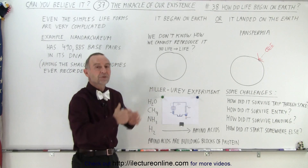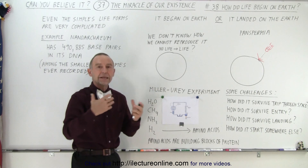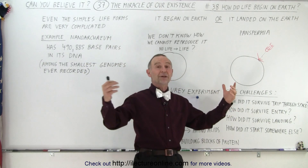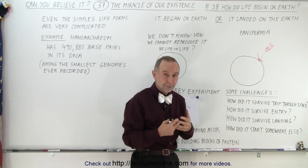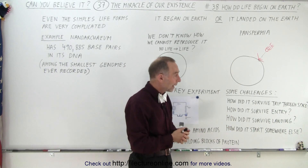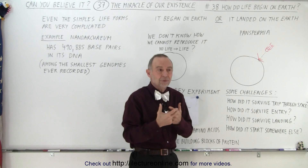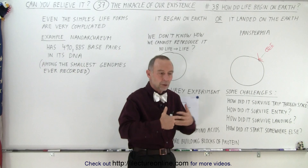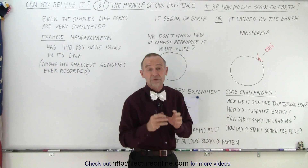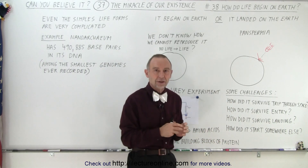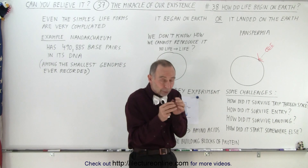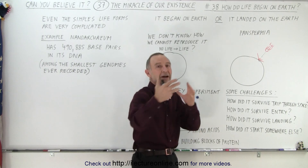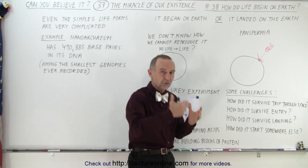Maybe life came from somewhere else and landed on the Earth on a meteor. Of course, there are problems with that — it probably spent millions of years floating through space coming from another solar system far, far away. The conditions in space are just absolutely horrendous: temperatures near absolute zero, all kinds of radiation. It just would not be a good place for life to exist for that long. However, maybe it was somewhere inside the asteroid, protected from those conditions, and the structure of it survived the trip to Earth.